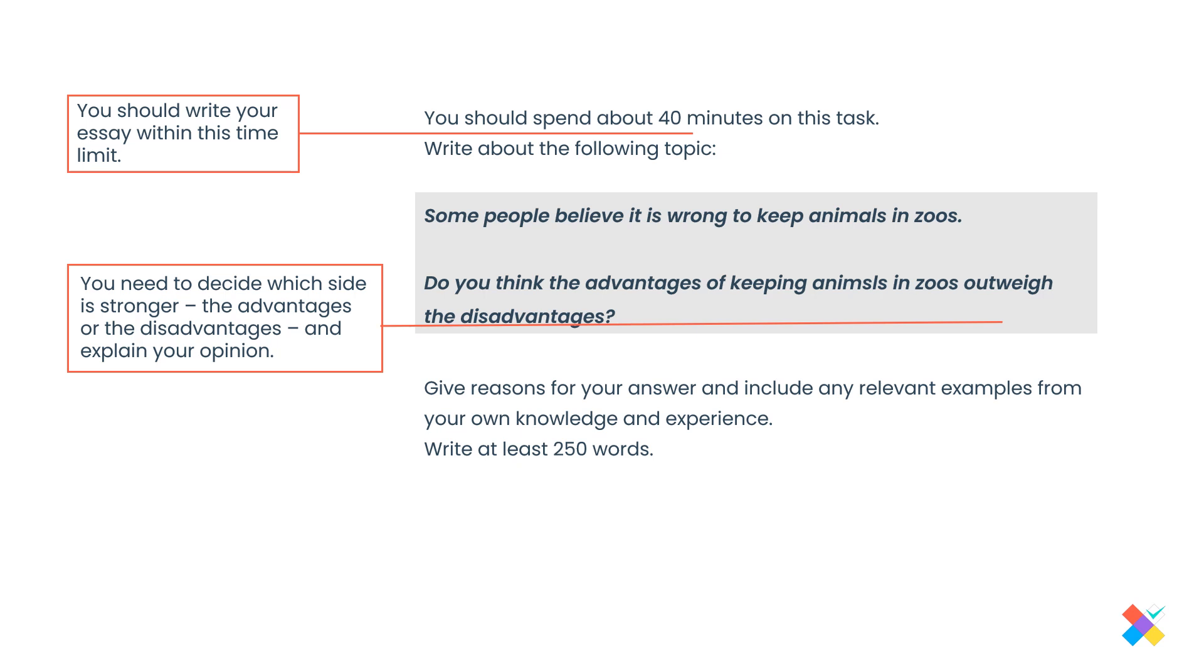Don't fall into the trap of, ah, this is an advantage and disadvantage. I say, so it's easy for me. No, this is an opinion essay. It's basically a wolf in sheep's clothing. You have to be very careful about this. So, first of all, you need to decide which side is stronger. Now, this is your call, the advantages or the disadvantages, and obviously, you have to explain your opinion. If you don't decide which is stronger and if you don't explain your opinion, it means that you haven't completely and fully answered the question, so you're going to be penalized under the task achievement criterion.